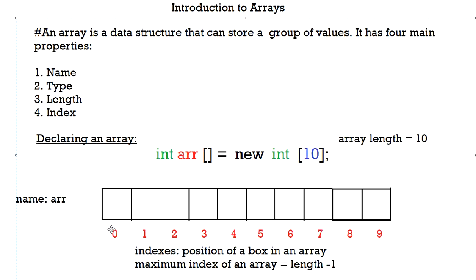The numbers you can see from 0 to 9 are called the indexes of an array. An index is basically the position of a box in an array. The first box has an index of 0 — by convention, every array starts from index 0. It continues up until the array's length. Since it starts from 0 and there are 10 boxes, it goes until 9. The maximum index of an array is its length minus 1 — so an array of length 10 has indexes from 0 to 9.